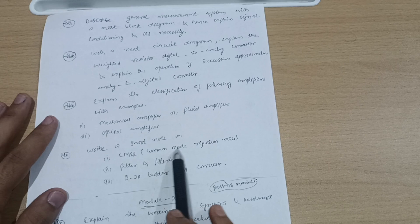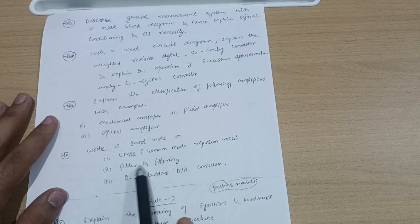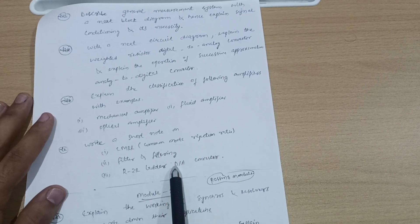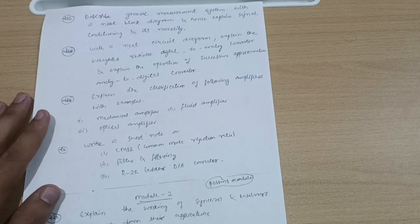Write a short note on CMRR - Common Mode Rejection Ratio, filter and filtering, and R2R ladder digital analog converters.